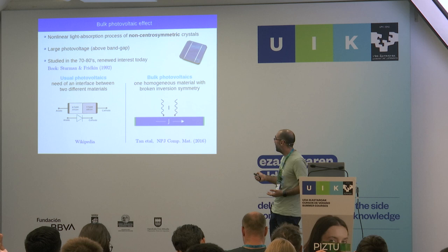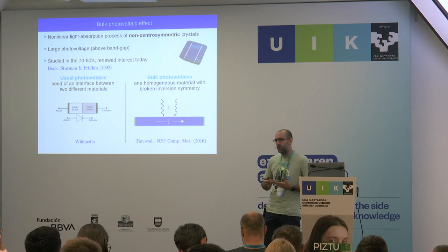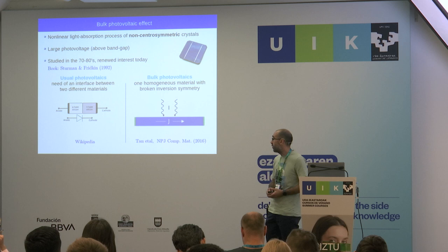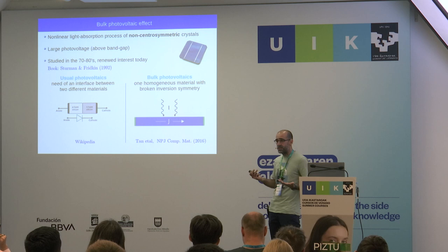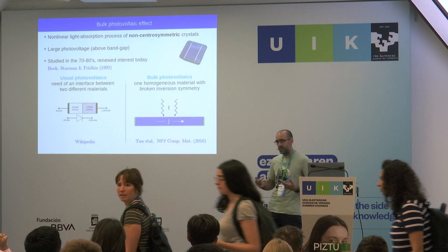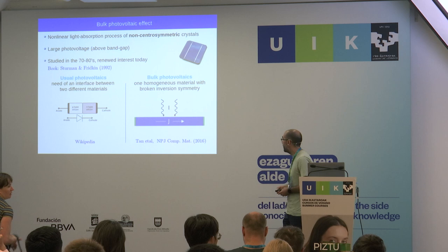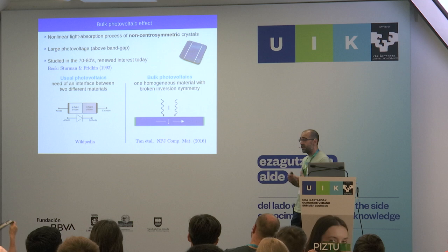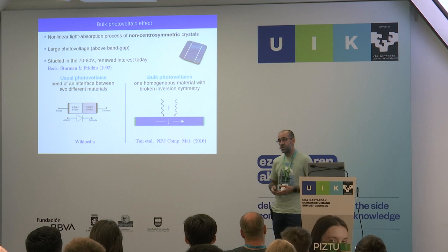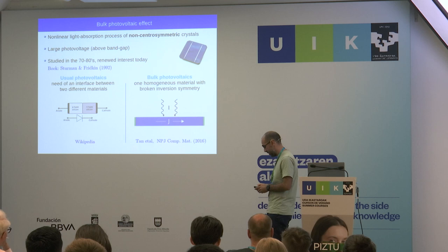The bulk photovoltaic effect probably won't substitute current solar cells, but it could complement them. In usual photovoltaics — we always think of silicon — when an electron is excited, since silicon is centrosymmetric, it doesn't know where to go, so you have to drive it to your electrode via a p-n junction. The nice thing about bulk photovoltaics is that it's one homogeneous material with broken inversion symmetry, and that broken inversion symmetry does the job for you.